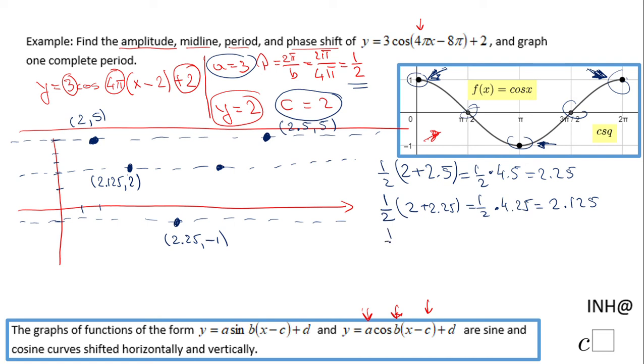Again, that is in the middle between 2.25 and 2.5, so again that's 1/2 times this sum. We have 1/2 times 4.75. That'll be 2.375. Let me double check that. Yeah, 2.375. So these are the coordinates of this point: 2.375, and obviously 2 because this point is on the midline. So now we can do the graph.